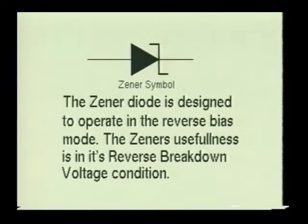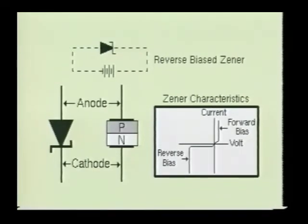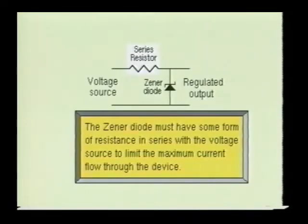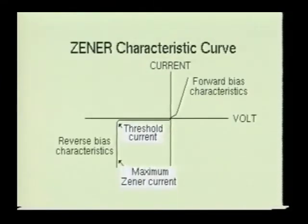The Zener diode is designed to operate at a specific breakdown voltage when reverse biased. This breakdown voltage is called the Zener breakdown or avalanche breakdown voltage. When the reverse bias voltage of the Zener is reached, the diode will break down and a very heavy reverse current will flow through the device. If this reverse current flow is not restricted by a resistor or some similar device, the Zener would be destroyed by the excessive current. Therefore, when Zener diodes are operated in the reverse bias mode, there must be a current limiting device in series with the Zener to keep it from self-destructing. The current limiting device is usually a resistor, chosen so that the Zener will operate between its threshold current and the maximum Zener current.